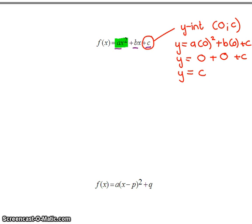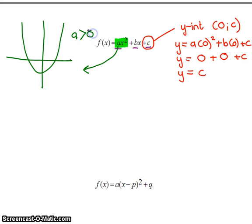The next thing which is useful from this form is that the a-value can tell you your shape of your parabola. We know that if our a-value is positive, we have the so-called happy parabola, whereas if the a-value is negative, we have the so-called sad parabola. And those are the two only really interesting things that we can see from that format of the equation.